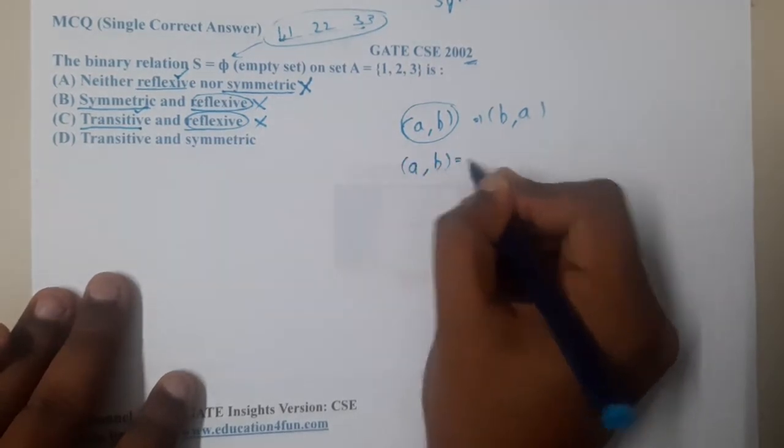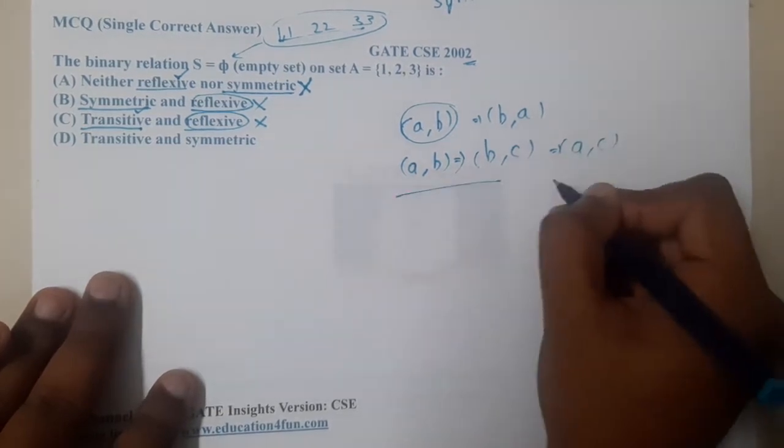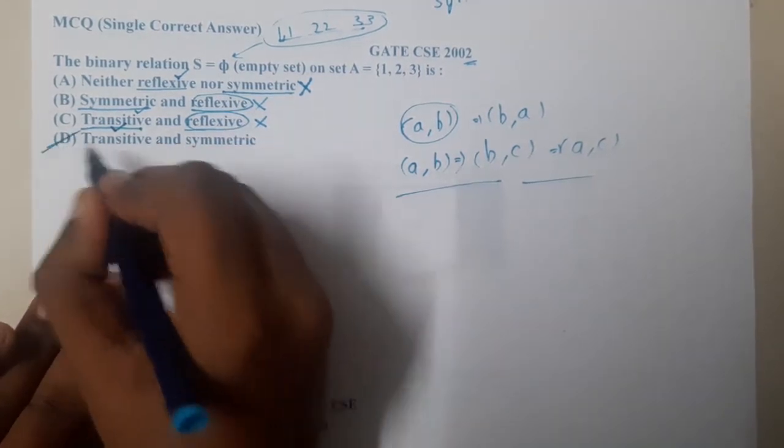But this says transitive. So if you recall transitive also, if (a,b) exists and (b,c) exists, only then (a,c) should exist. So if nothing exists, nothing will exist. So basically, transitive is also correct.